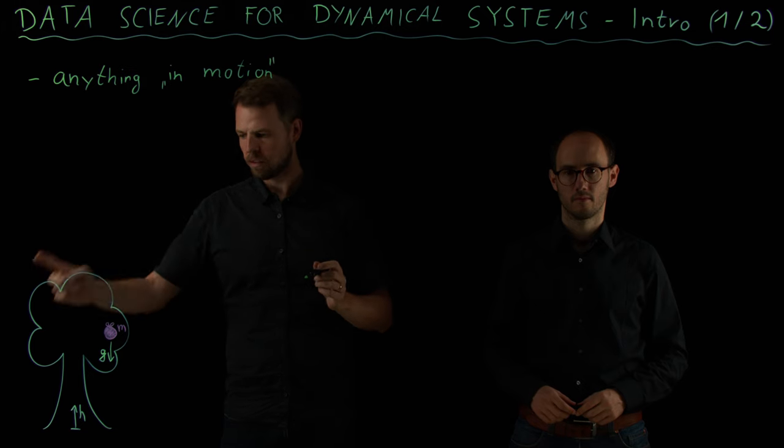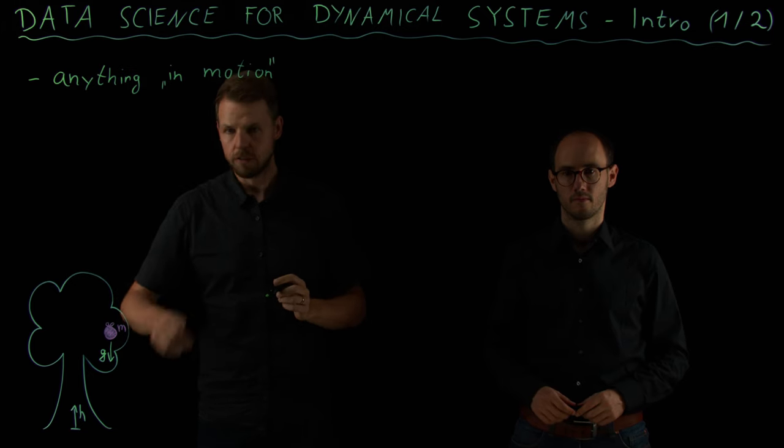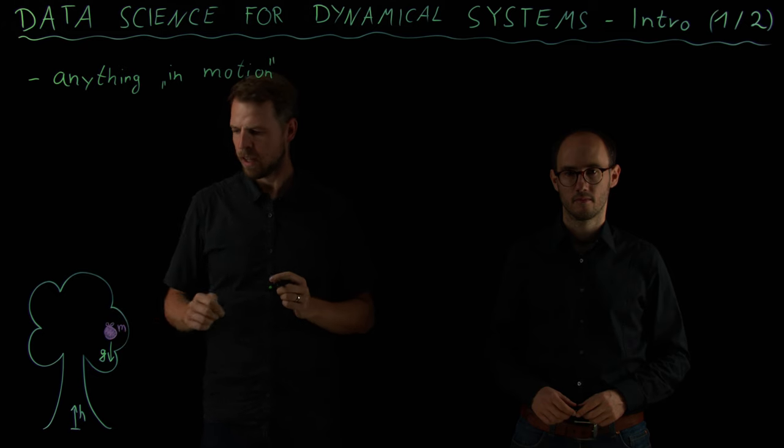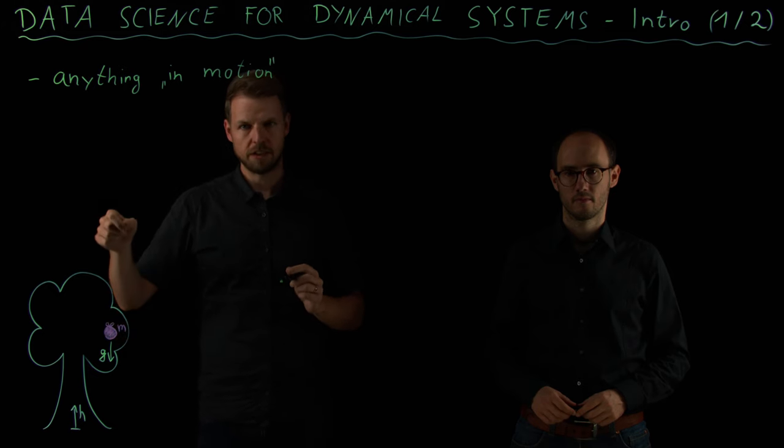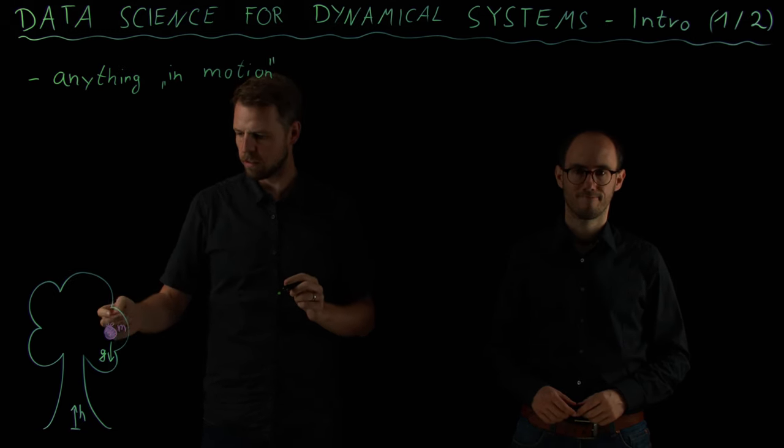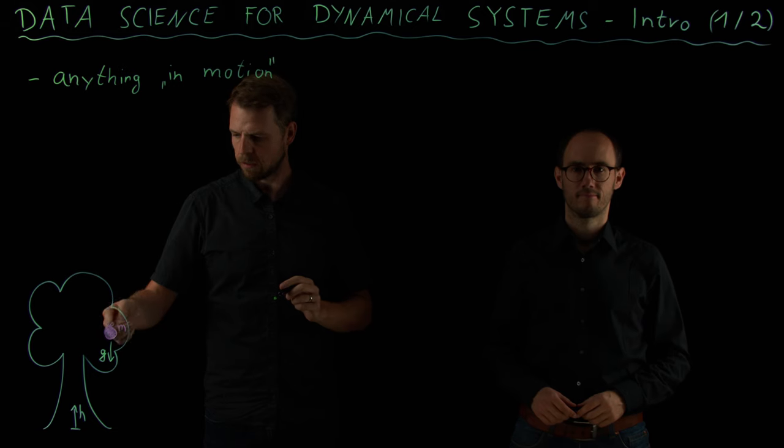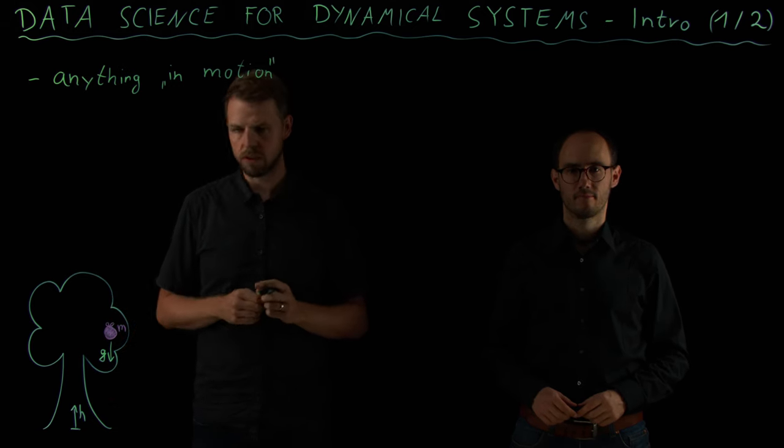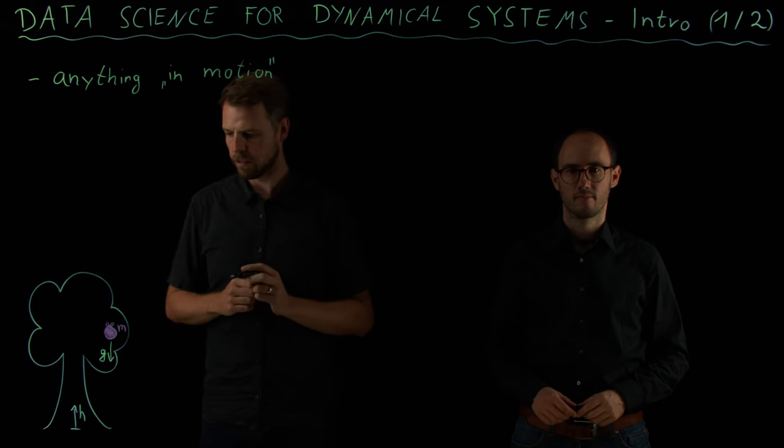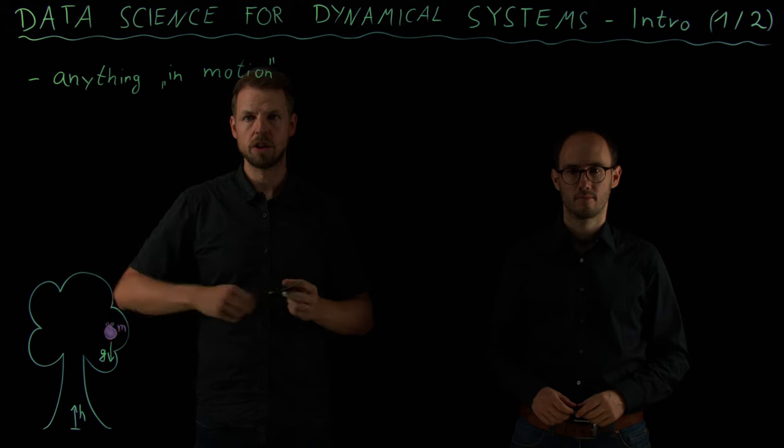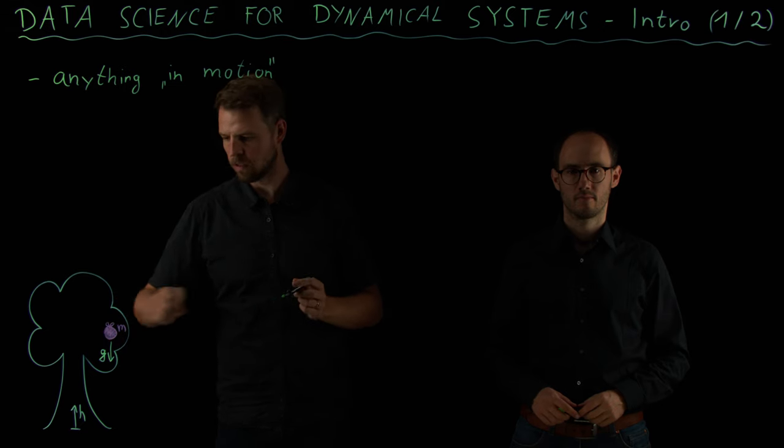To start with a simple example, let's consider Newton's apple. We have this apple hanging on a tree and at some point it starts to fall. What we can say about the system is we have this apple which has a mass m. It has a height h, the distance to the floor which is going to decrease as the apple starts falling. And it's going to be accelerated by the gravitational force. I have the gravitational constant as g here.